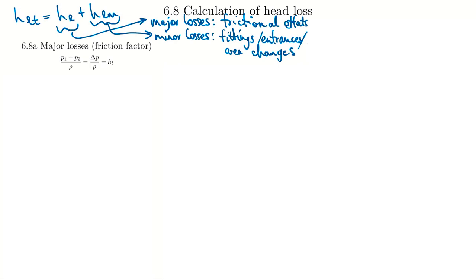Taking the energy equation above, we can simplify to say the head loss equals our pressure difference, considering a case without elevation change or velocity change — since we handle those separately. So very clearly, head loss really just means a pressure change. Friction causes a pressure change, and that's the only term that can change in response to friction, not velocity, because we must maintain a mass balance — the volumetric flow rate must remain the same throughout the pipe. Velocity can only change from area changes.